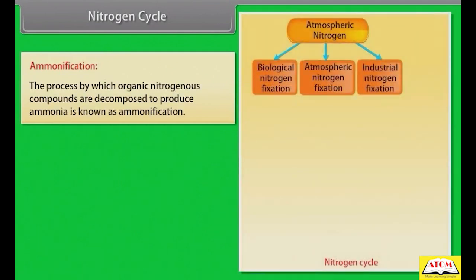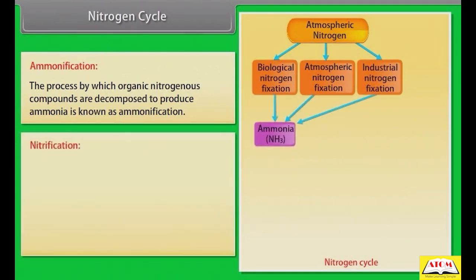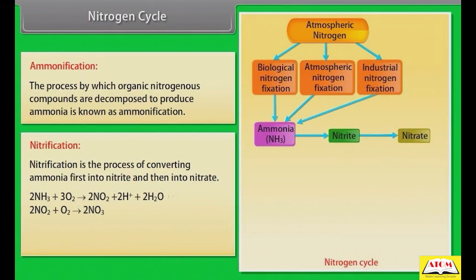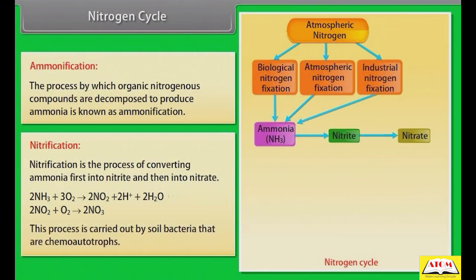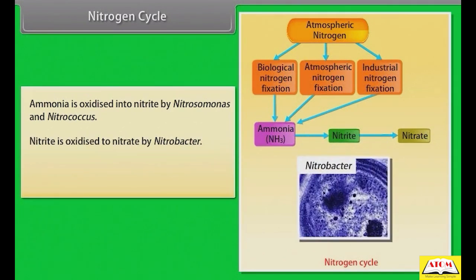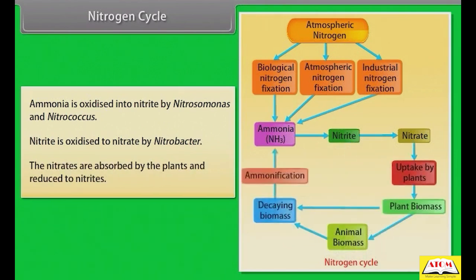Ammonification: the process by which organic nitrogenous compounds are decomposed to produce ammonia is known as ammonification. Nitrification: nitrification is the process of converting ammonia first into nitrite and then into nitrate. The reaction is: 2NH3 + 3O2 → 2NO2⁻ + 2H⁺ + 2H2O, and further to 2NO3⁻. This process is carried out by soil bacteria that are chemoautotrophs. Ammonia is oxidized into nitrite by Nitrosomonas and Nitrococcus; nitrite is oxidized to nitrate by Nitrobacter. The nitrates are absorbed by plants and reduced to nitrites.